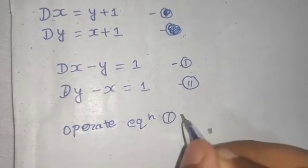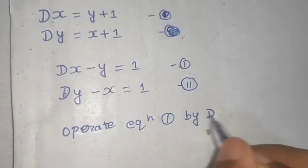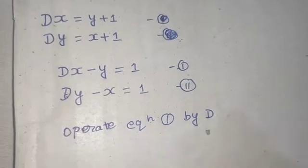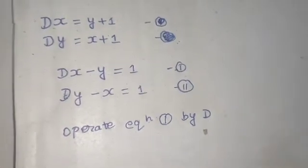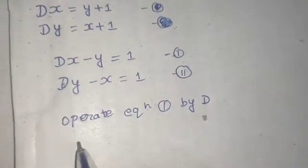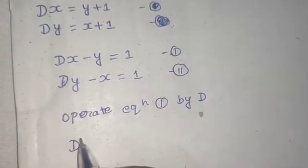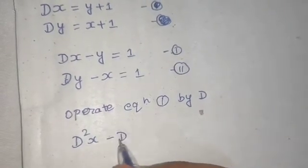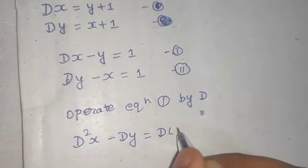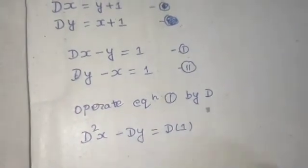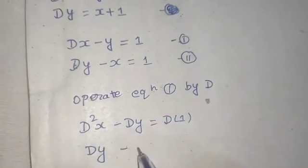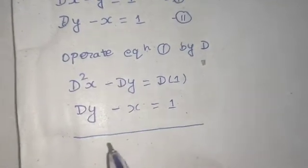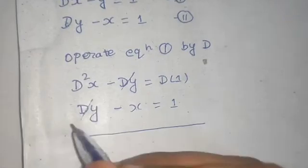Let's operate equation 1 by D, which simply means differentiating both sides with respect to t. This gives D²(x) - D(y) = D(1). The second equation remains as D(y) - x = 1. Adding these two equations, D(y) and -D(y) cancel out.